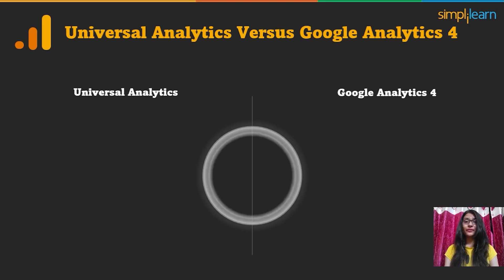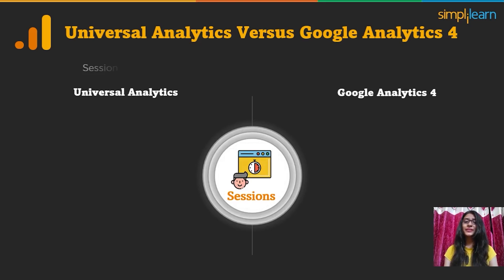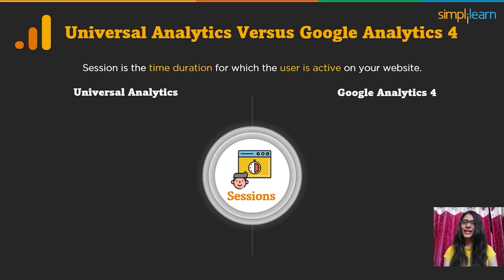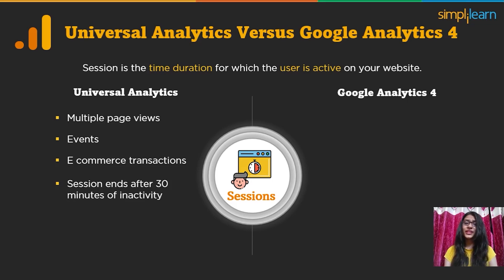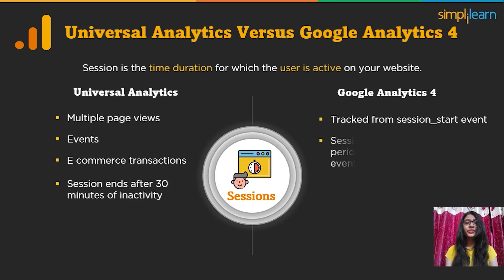The next metric is Sessions. A session is the time duration for which a user is active on your website. A Universal Analytics session may consist of multiple page views, events, e-commerce transactions, etc. The session is considered ended if the user has 30 minutes of inactivity or any other event for which session end is triggered. In Google Analytics 4, session metrics are tracked from the session start event, which automatically gets triggered with basic interaction on your website. The session duration depends on the period between the first and the last event.